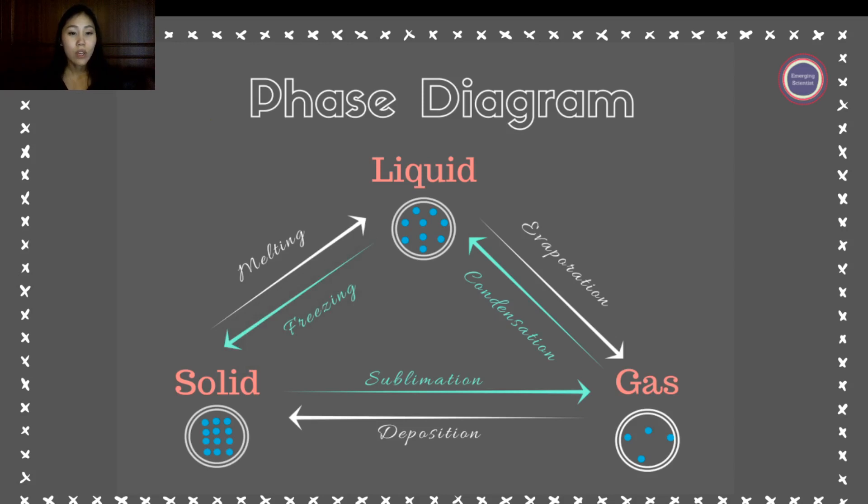So notice, every state, you could have double arrows to them. You can go from solid to liquid, you can also go from liquid to solid. You can go from gas to solid, you can also go from solid to gas. So this forms the concept of the three states of matter and how they're connected.